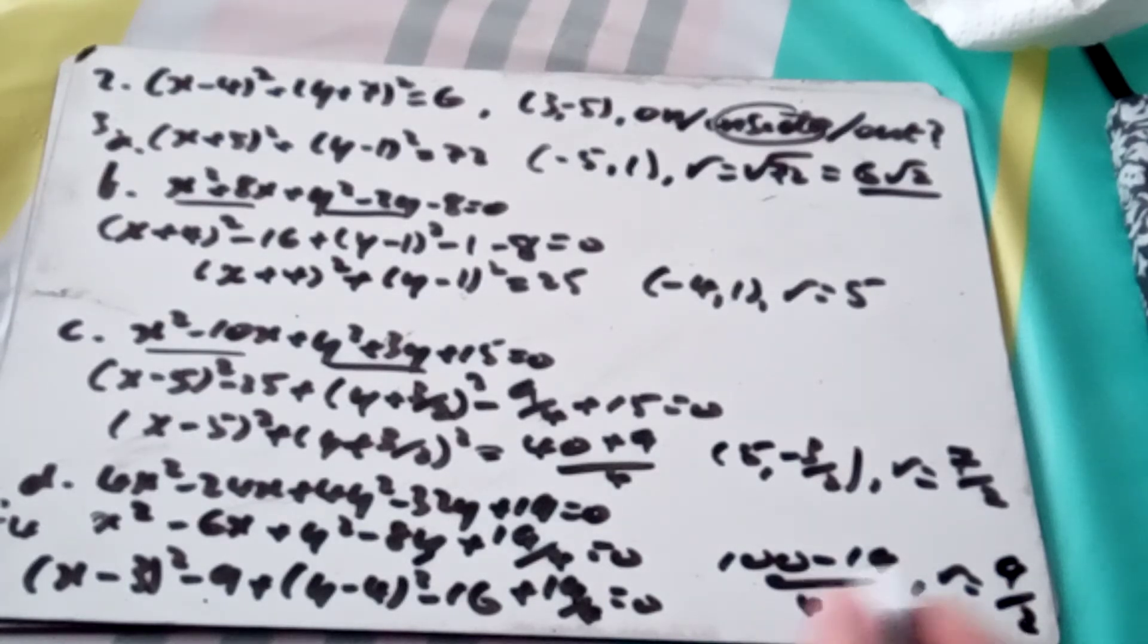So that's the only bit really where I've got to deal with fractions at the end. So my center is the point (3, 4), the negative of those. Radius, get my constant to the other side, press buttons, square root it, r equals 9/2.